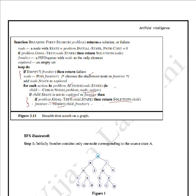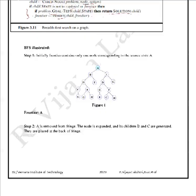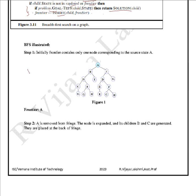For each node this process continues. Initially, the frontier contains only the root node A. In step 2, A is removed from the fringe and its children B and C are added into the frontier. Since it is a FIFO queue, B is pushed first, then C.